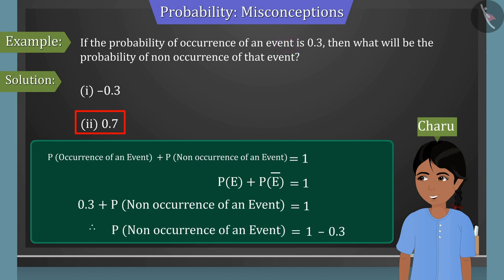Therefore, the probability of the event not occurring is 0.7. Charu's answer is correct.